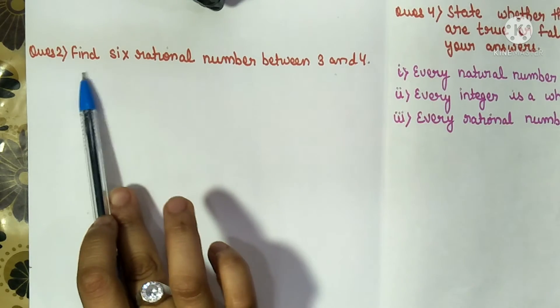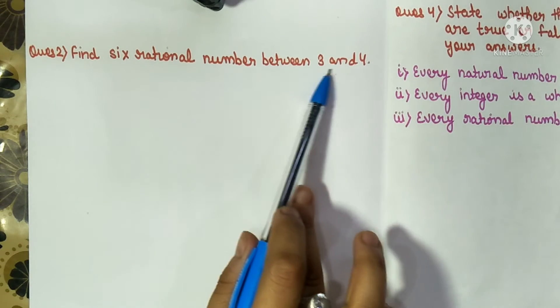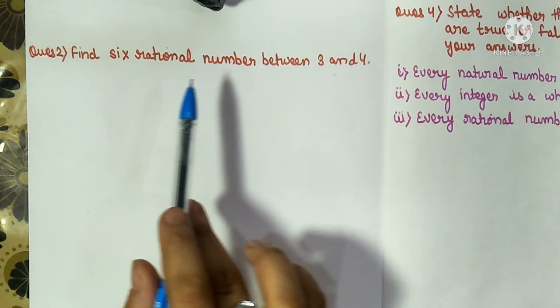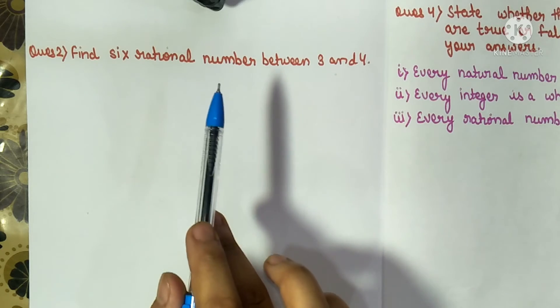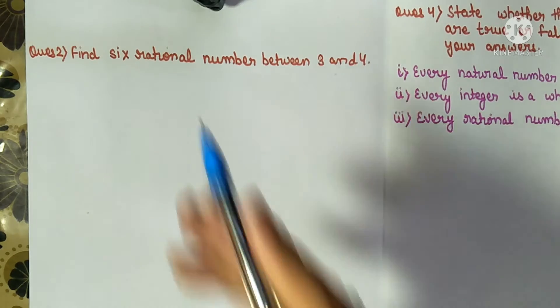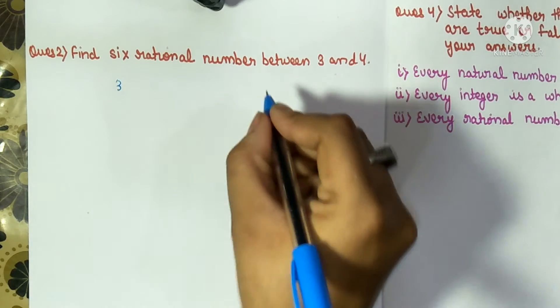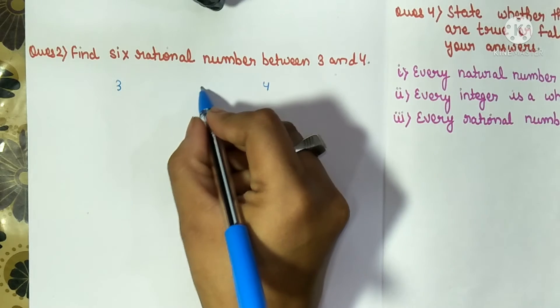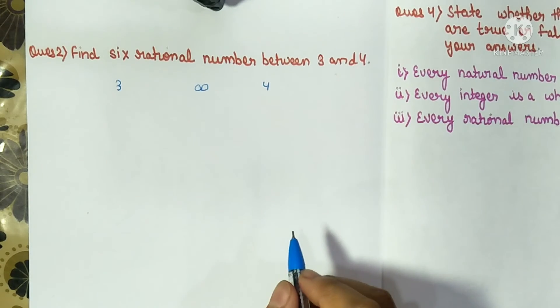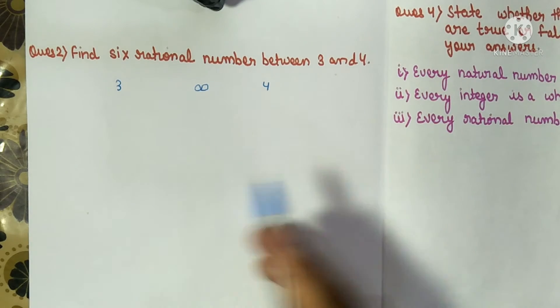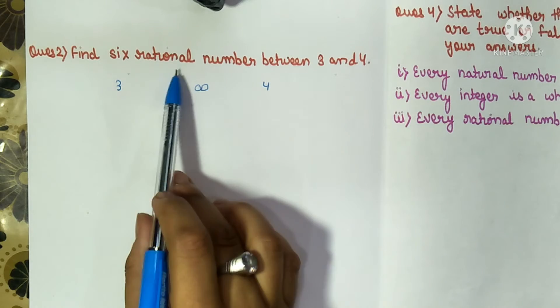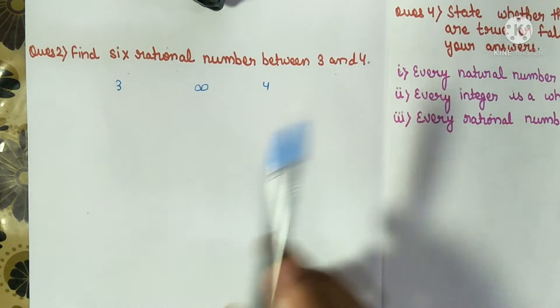Question number two says: Find six rational numbers between 3 and 4. As we have already told you in the introduction video, between any two rational numbers there are infinitely many rational numbers. Now this question is asking us to find six rational numbers between three and four.